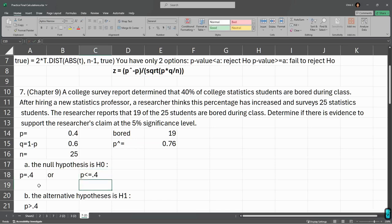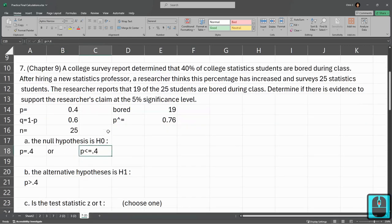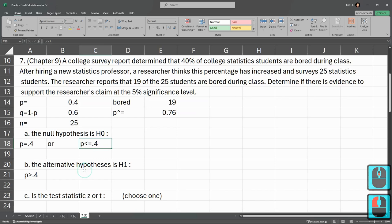Or you could write it as P is less than or equal to 0.4. This is less than or equal to. It takes too long to type less than or equal to in the math formatting stuff. Either one is correct. The alternative hypothesis is what really counts here.